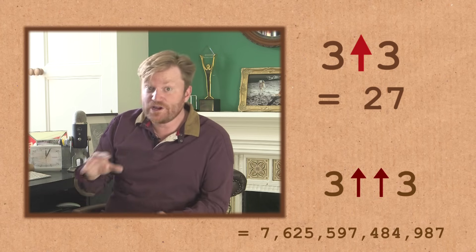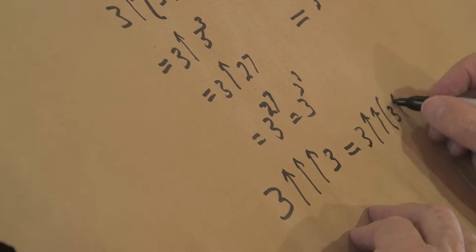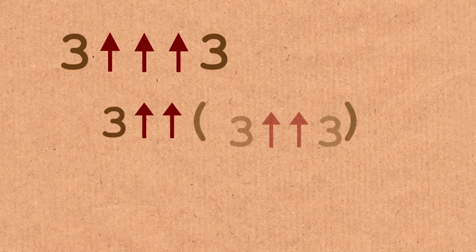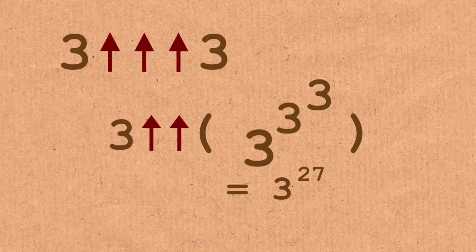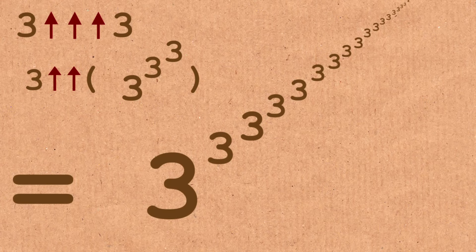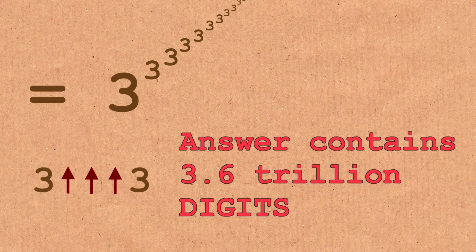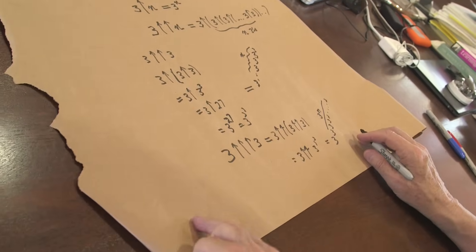What happens if we use three arrows? So this is three double arrow of three double arrow of three. What is three double arrows three? It's three to the three to the three — three to the 27th. So three double arrows of anything is three to the three to the three to the three, with three to the 27th threes. Three triple arrow of anything: three to the three to the three to the three to the three — to the 27th power. That's getting to be a pretty big number. Three arrows has given us a number so big I can't even write it on the screen.